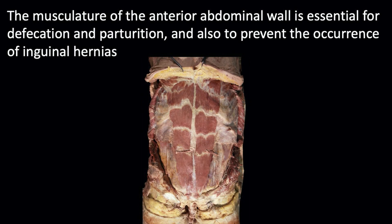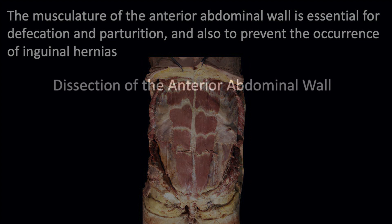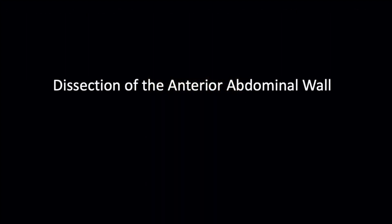The musculature of the anterior abdominal wall is essential for defecation and parturition and also to prevent the occurrence of inguinal hernias. Let's start the dissection of the anterior abdominal wall.